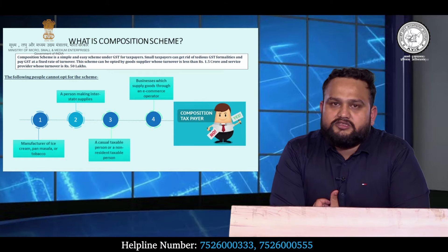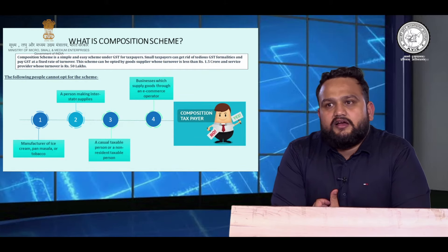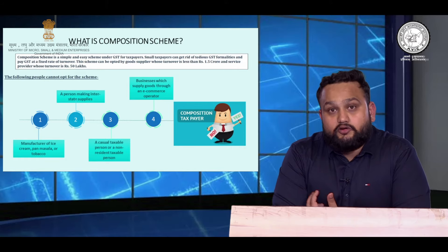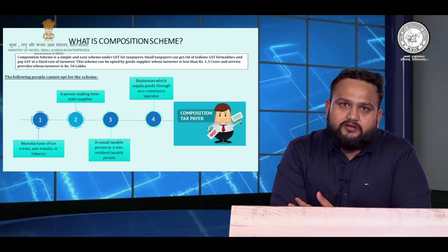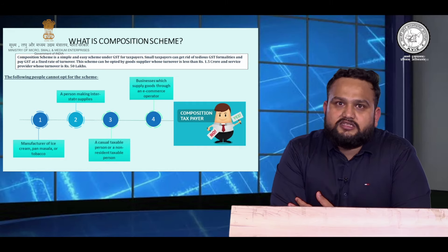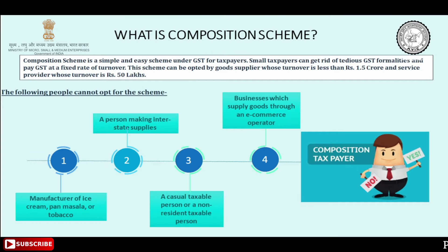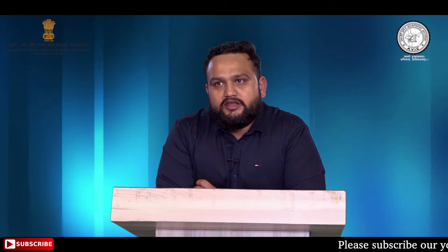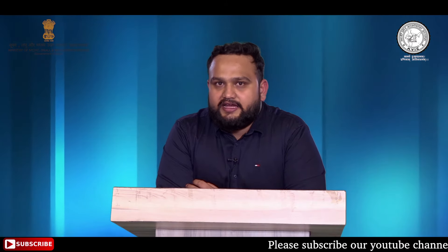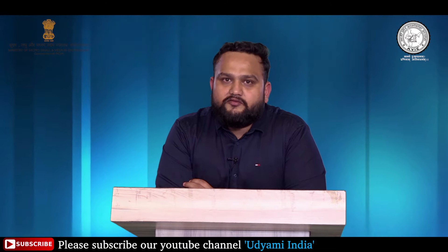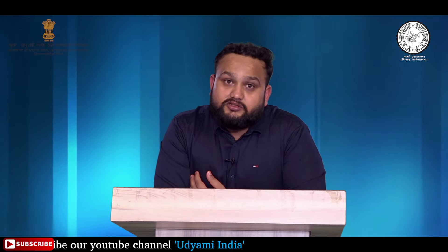A normal taxpayer who has not opted for the composition scheme has to file GST returns every month. There are two returns at present which he has to file every month. Under the composition scheme, rather than filing returns monthly, he has to file a return quarterly — only four returns in the entire year — whereas other taxpayers not on the composition scheme have to file a minimum of 24 returns annually.